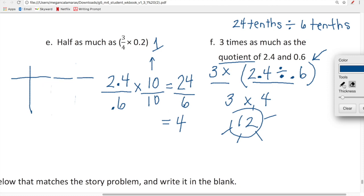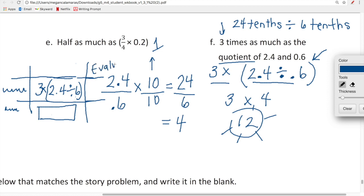It's a table that looks very similar to what we did in our mid-module celebration of learning. We are going to have a table where sometimes there's an expression like three times 2.4 in parentheses divided by 0.6 and then you're going to have to write the words. Or sometimes we'll have the words, three times as much as the quotient of 2.4 and 6, and then you'll have to fill in the expression. And then I also believe that you'll have to evaluate as well.